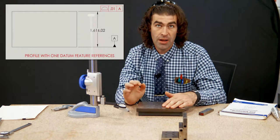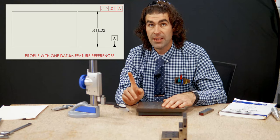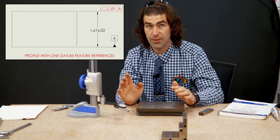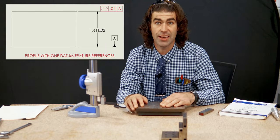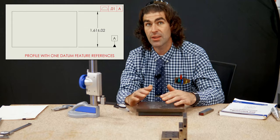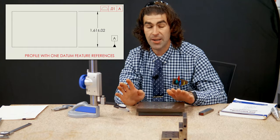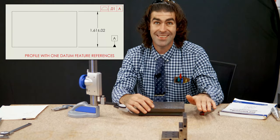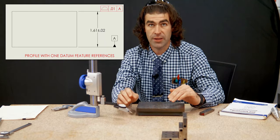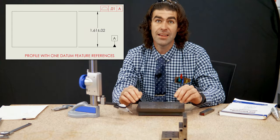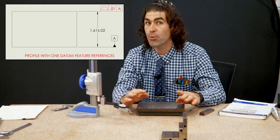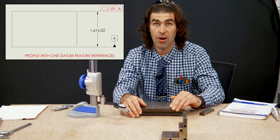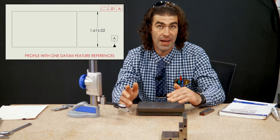Profile with one datum reference, in this situation, does the exact same thing as parallelism — the exact same check. If you had two separate surfaces, there'd be a coplanarity requirement, but we check that profile just like we did for parallelism. The size is treated differently even though it's a profile. This is an outdated technique not supported by the 2018 standard, but you'll still see it out there. The only benefit from using profile over parallelism is if you had two coplanar surfaces you were trying to control.